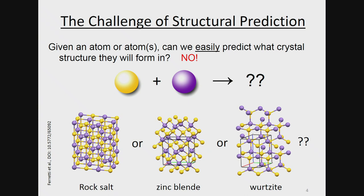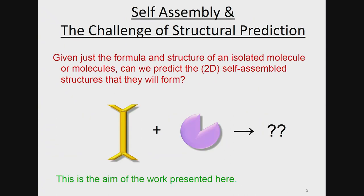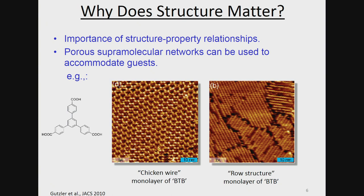I'll get back to that problem later in this talk, but what I want to discuss is the analogous problem for self-assembly. If I'm given two molecules — this yellow molecule and this violet molecule — can I say something, looking at the individual molecules alone, about the geometry of the self-assembled architecture they will form? One is interested in the geometry of the self-assembled architecture: in one picture the molecules have self-assembled with cavities, whereas in another they are tightly packed. You would like to know which of these two it would form, because in these cavities you can put in other molecules. This is an interesting question for applications.